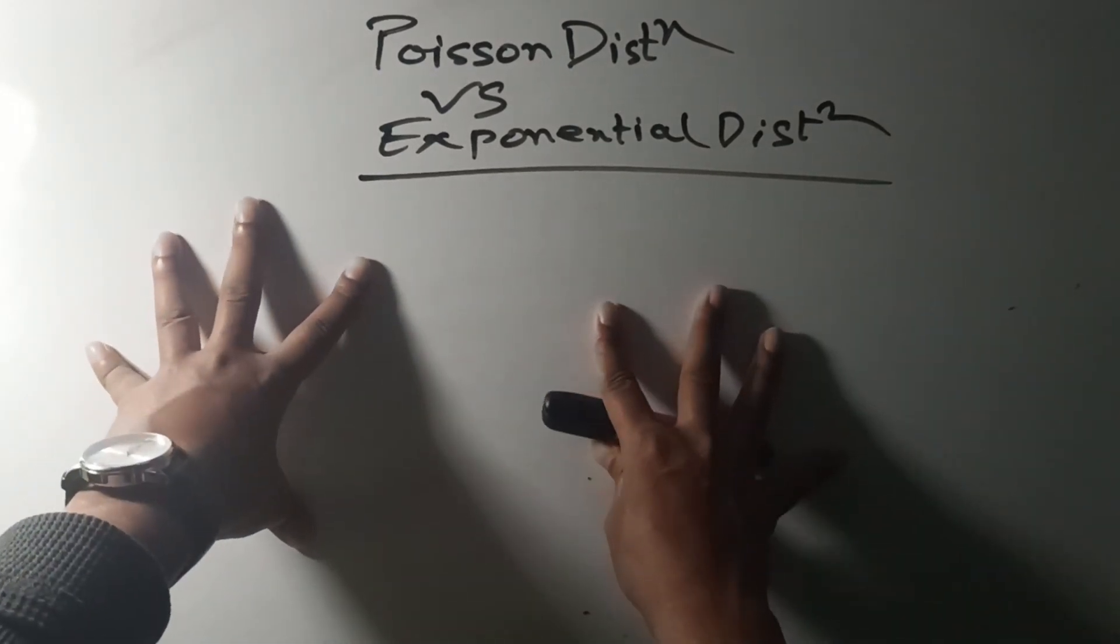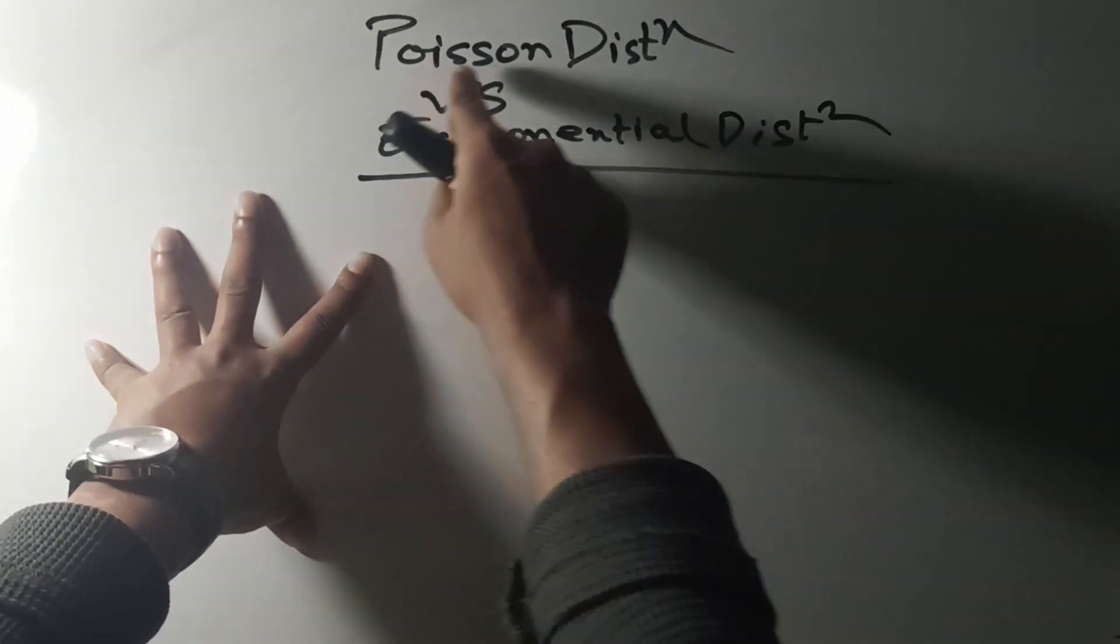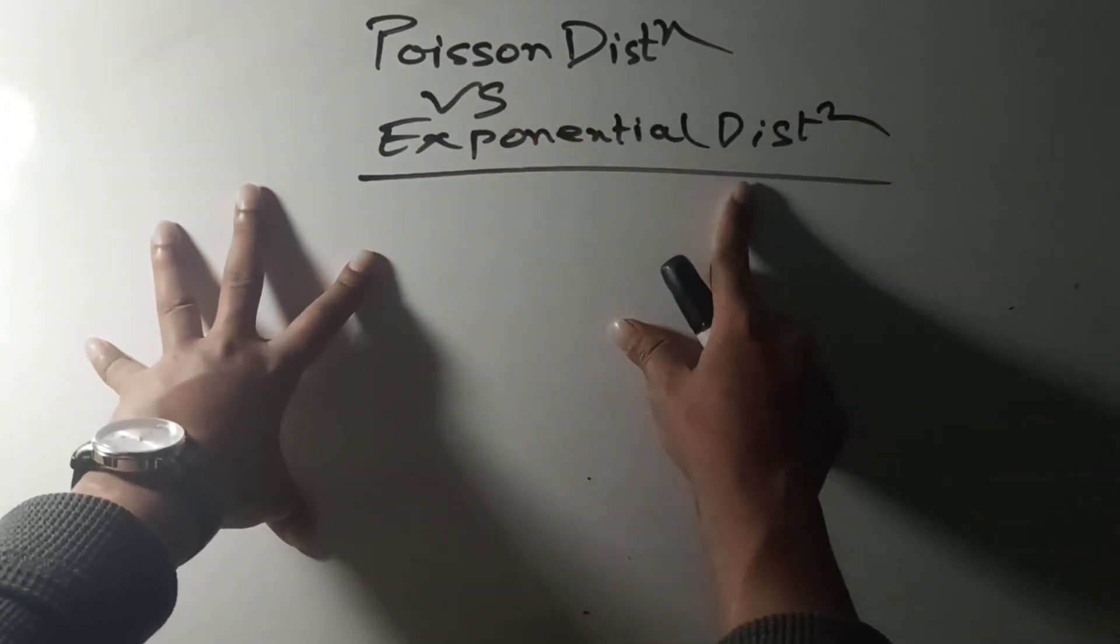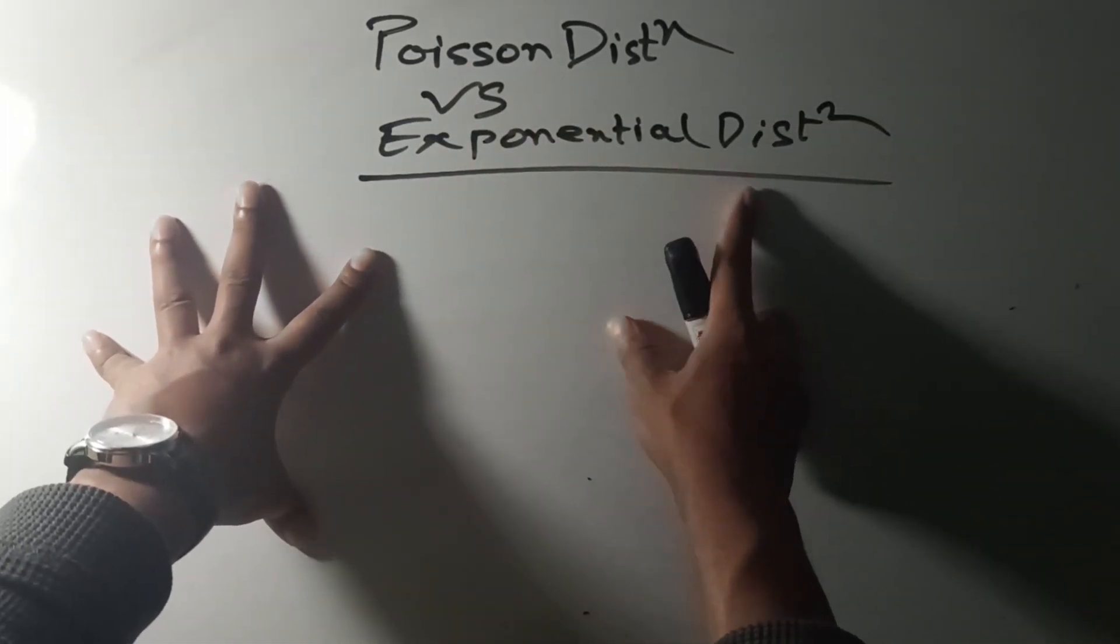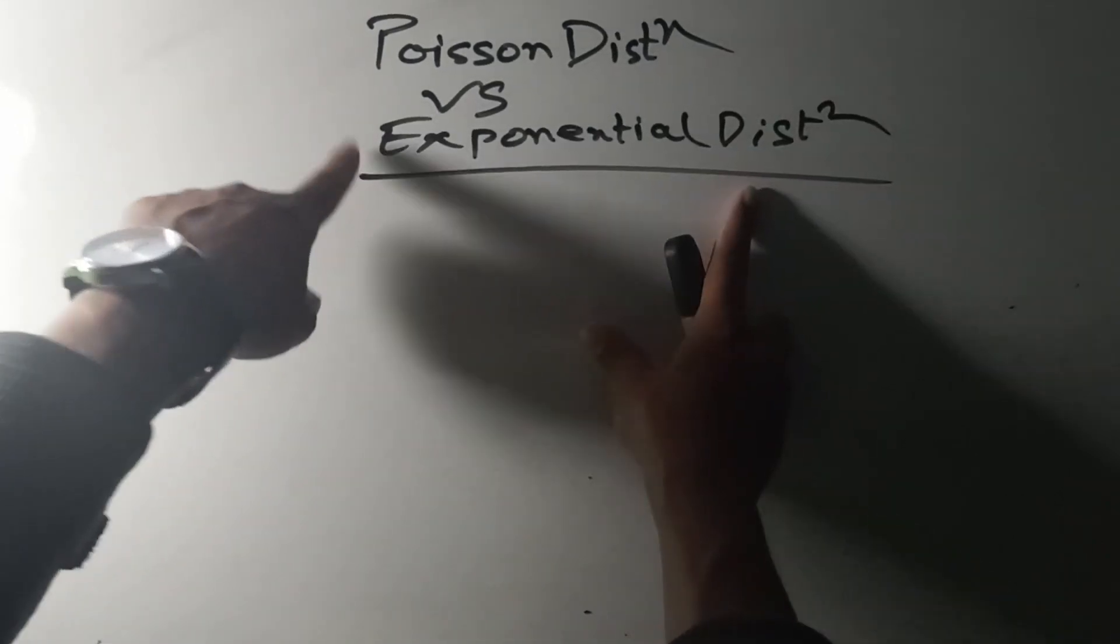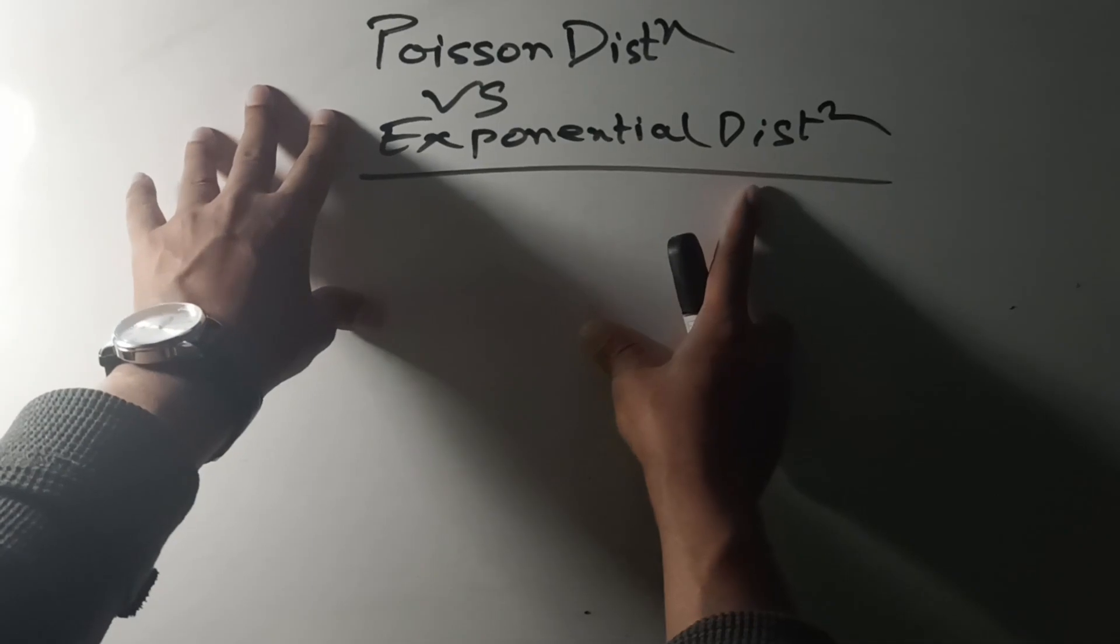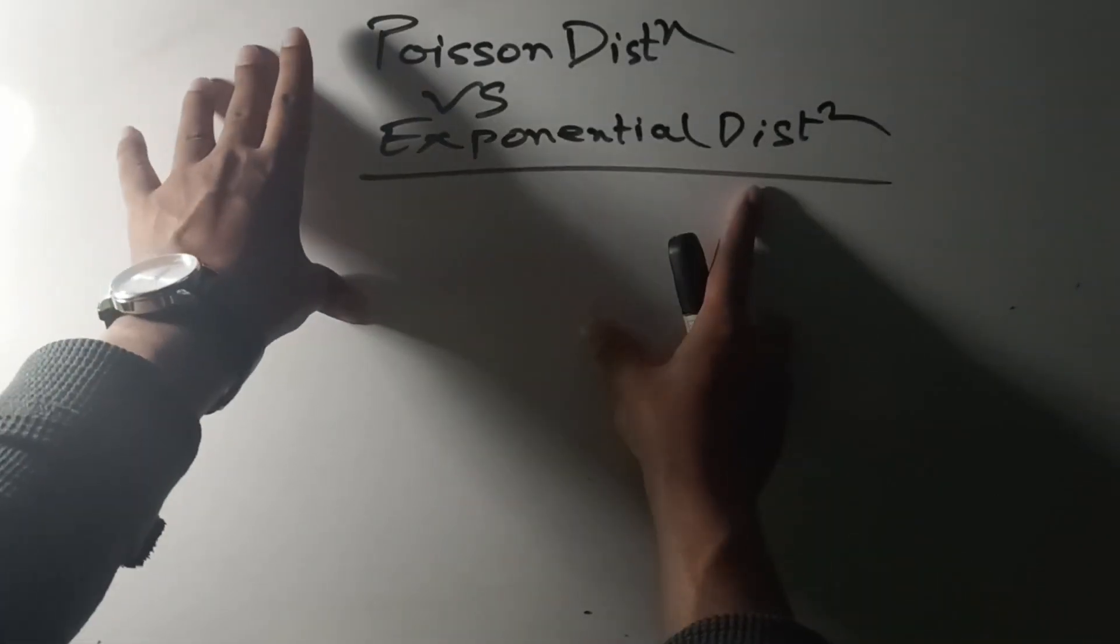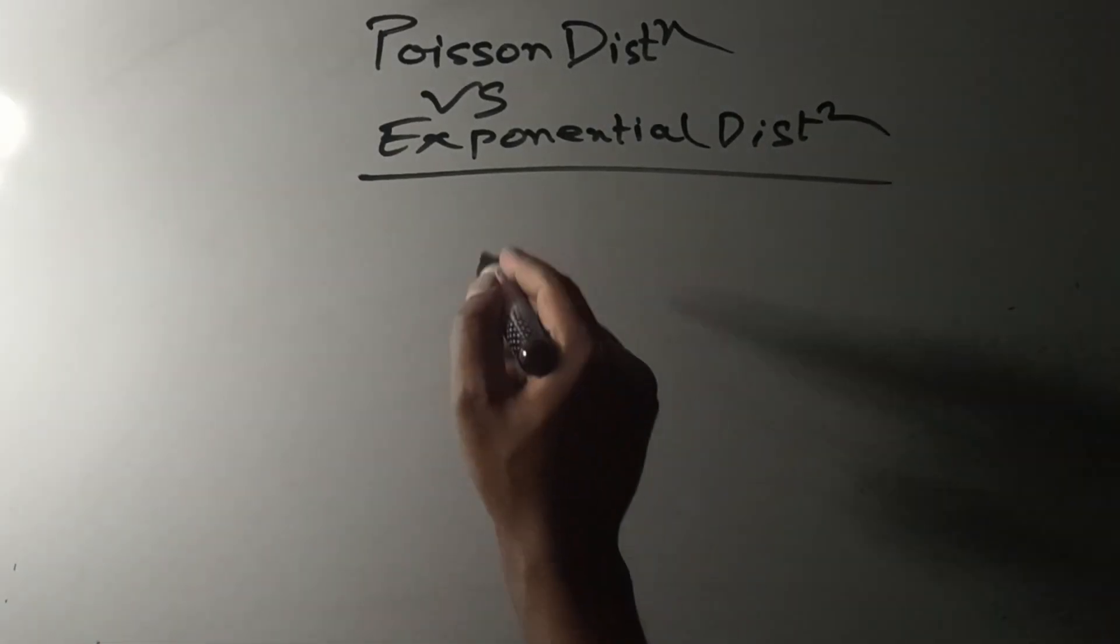Hello everyone, today we will understand the basic difference between the Poisson distribution and the exponential distribution using a real-life example where you can differentiate them very easily.